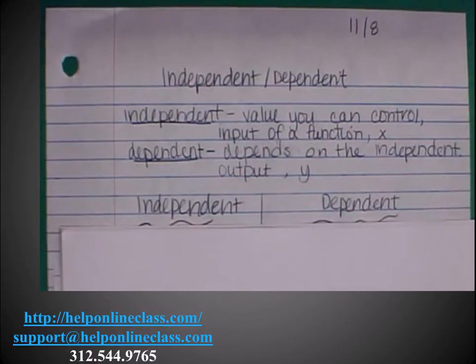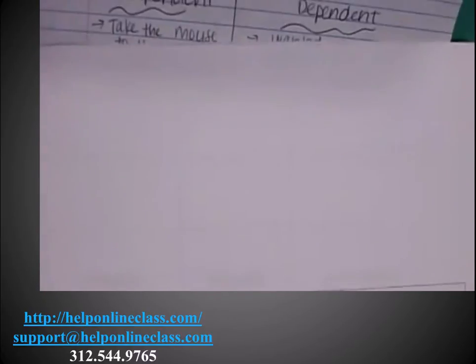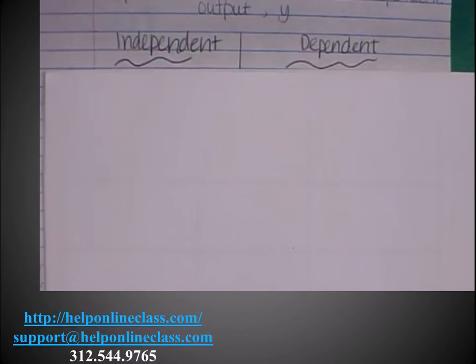In class, we made a list of independent and dependent. I'm going to read you a story just like I read to the students in class. There are several pairs in this story that will line up. In particular, the book we're going to read is called If You Take a Mouse to the Movies.